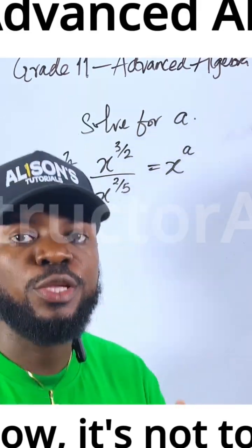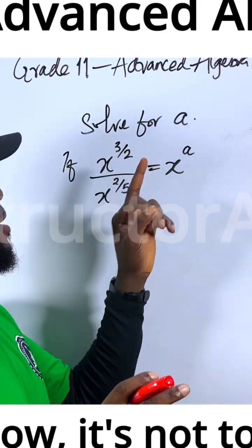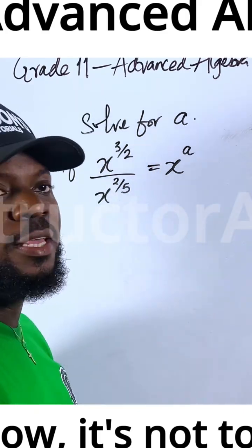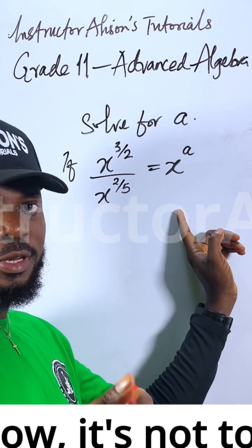All right guys, welcome to my channel. Let me show you a quick way to solve a Grade 11 advanced algebra problem. You're asked to solve for a if x to the power of 3 over 2 divided by x to the power of 2 over 5 equals x to the power of a.